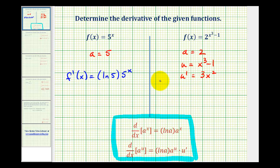Now we have all the information we need. F prime of x is going to be equal to natural log a, which is natural log 2, times a to the power of u, which is the original function, 2 to the power of x cubed minus 1, times u prime, and u prime is 3x squared.